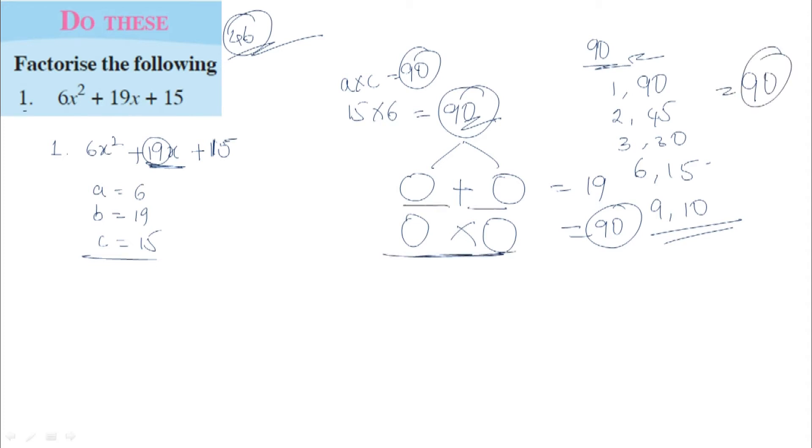When we multiply these, we get 90. But when we add two numbers, we should get 19. So 9 plus 10 equals 19, and 9 times 10 equals 90. The two numbers are 9 and 10.